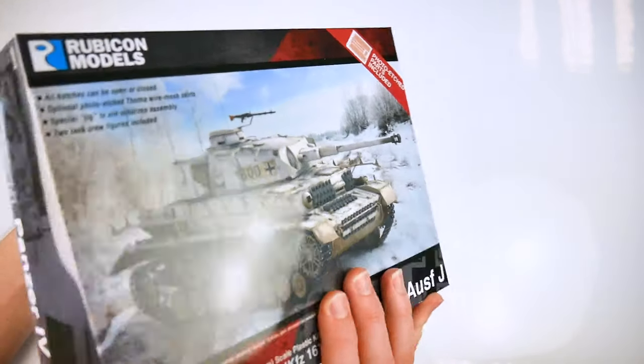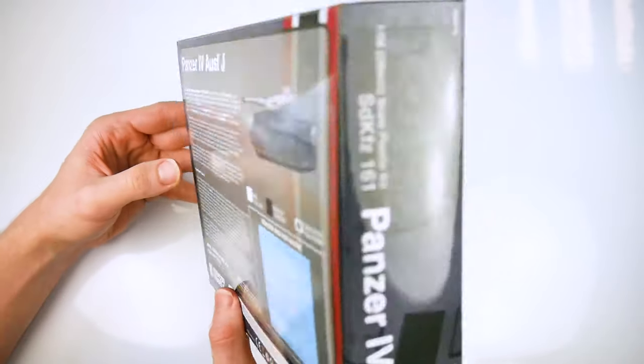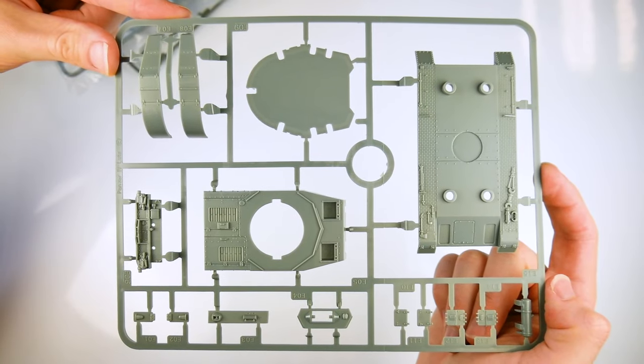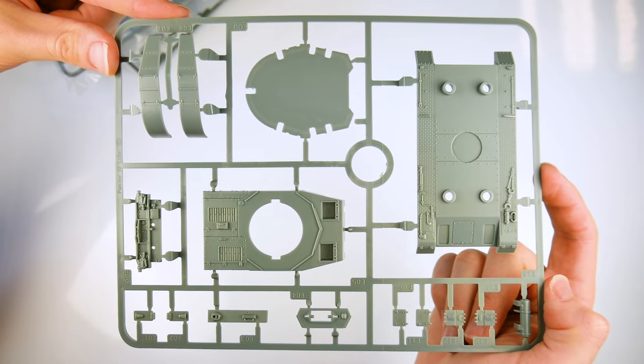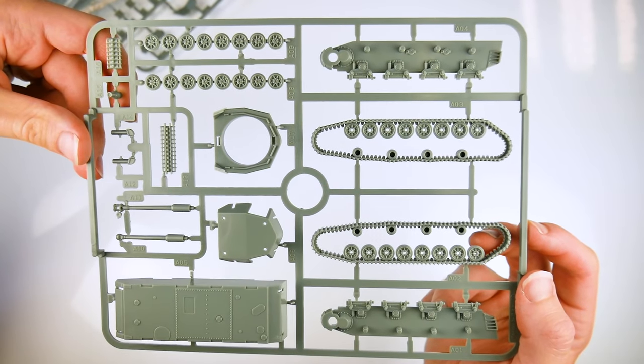The Panzer IV Ausf J was a wartime expedient simplified design with a dual-gear hand-cranked turret and a reserve fuel tank. Thanks to Allied bombing raids, the Ausf J design points had also been changed by 1944 which meant no Zimmerit paste and wire side skirts rather than plates.